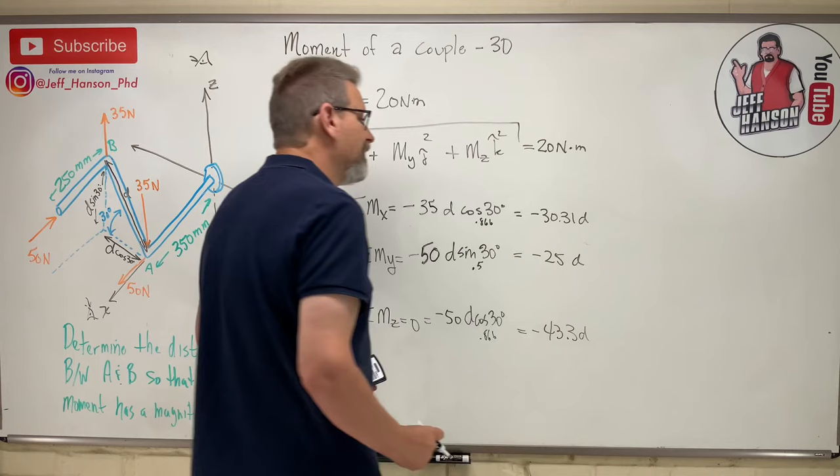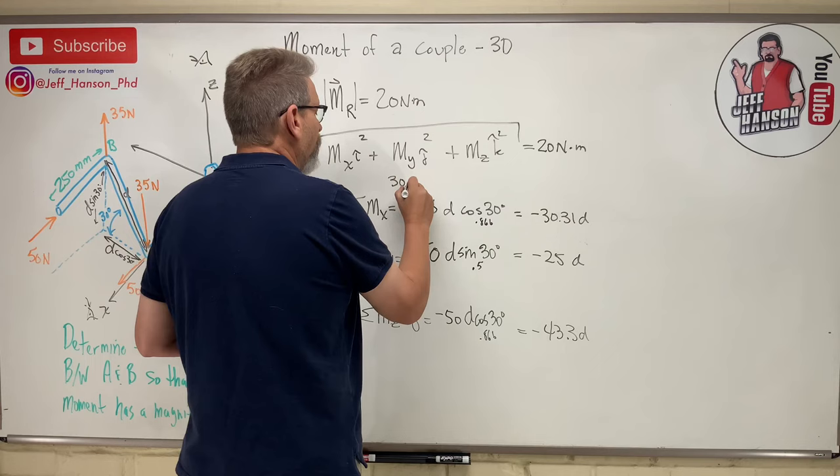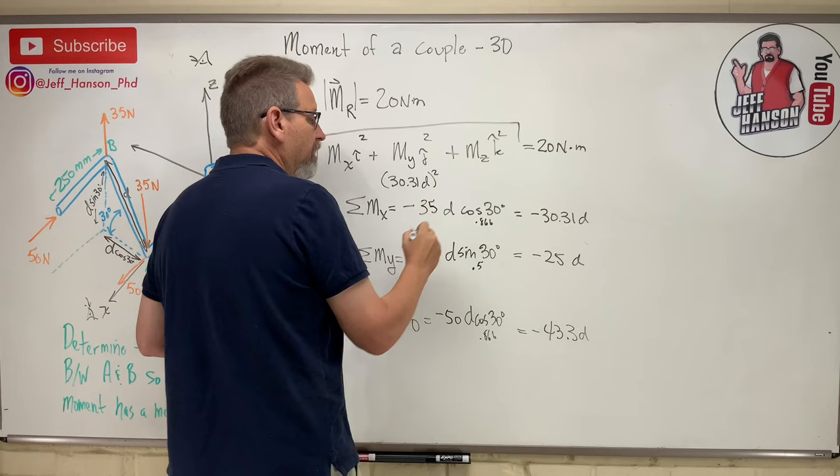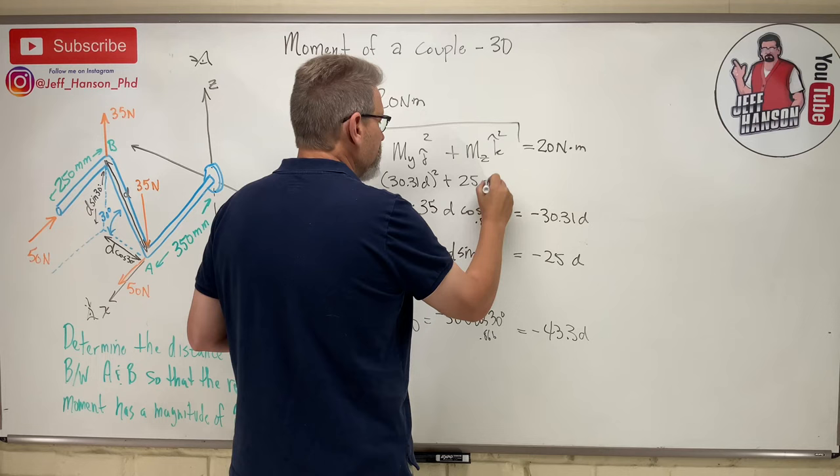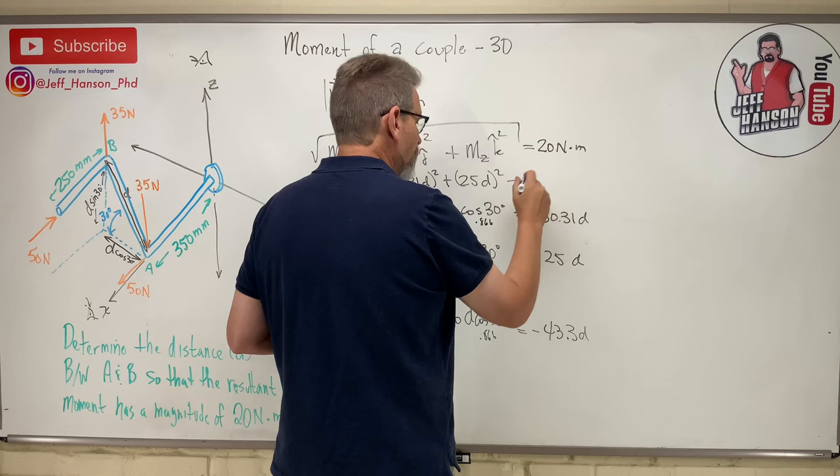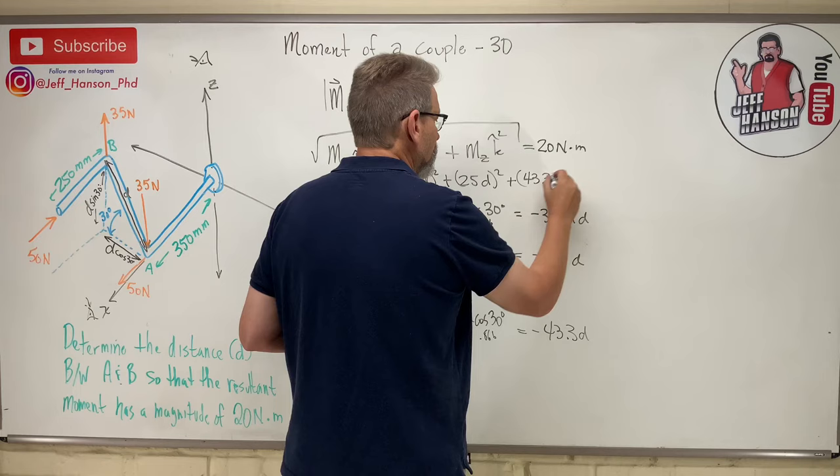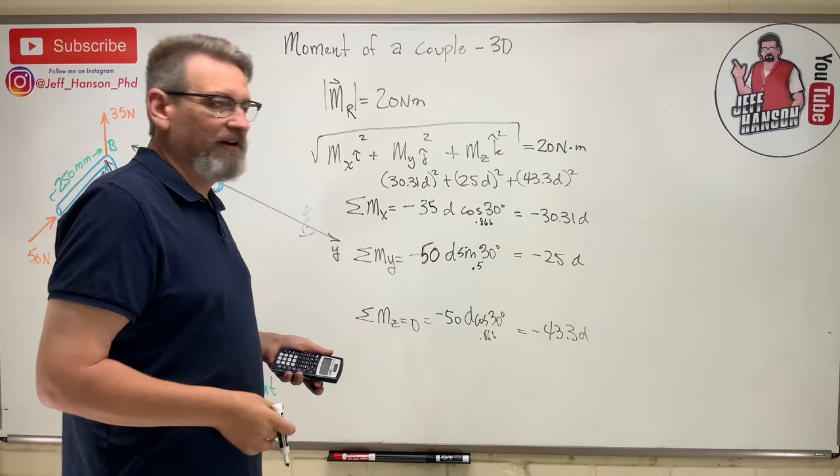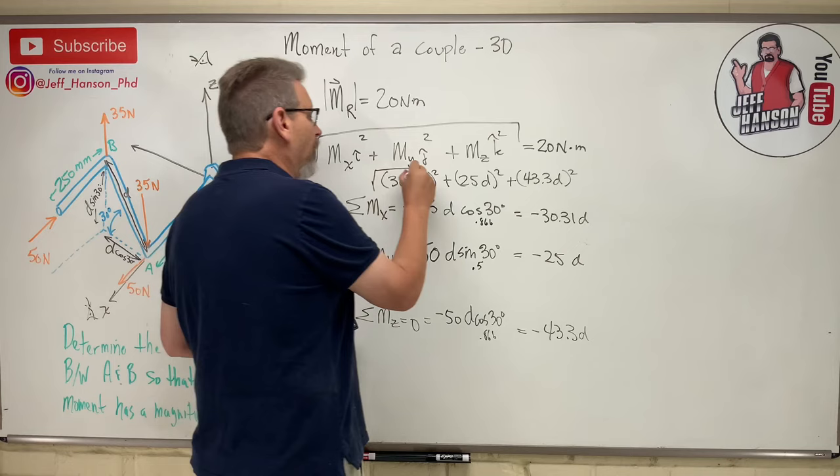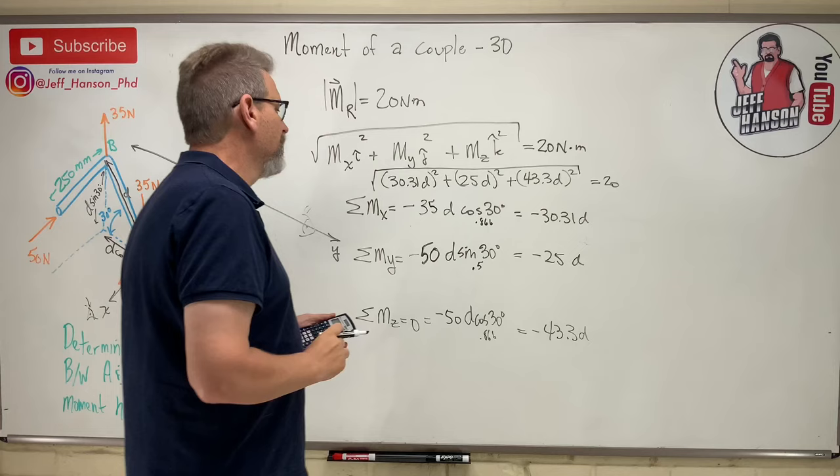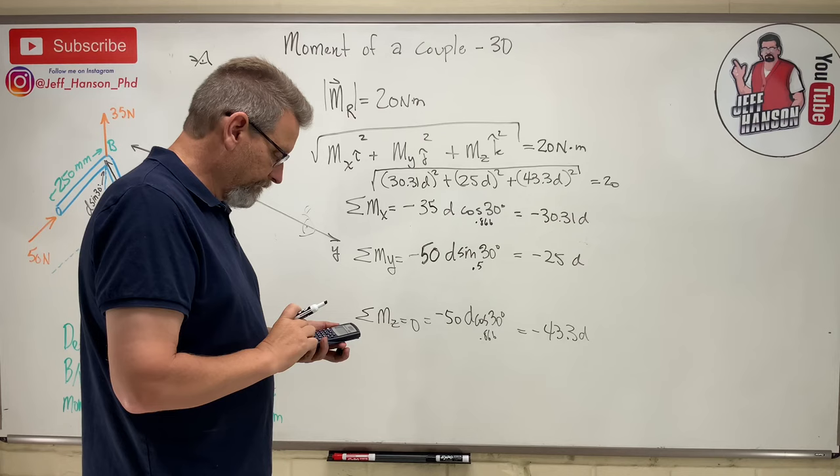So how do I find this? Well, it's this here: it's 30.31 d quantity squared plus 25 d quantity squared, and then plus 43.3 d quantity squared. Why did I leave off the negatives? Well, because you square a negative, it becomes a positive anyway, so no big deal. And then we take the square root of all of that and that has to equal 20.